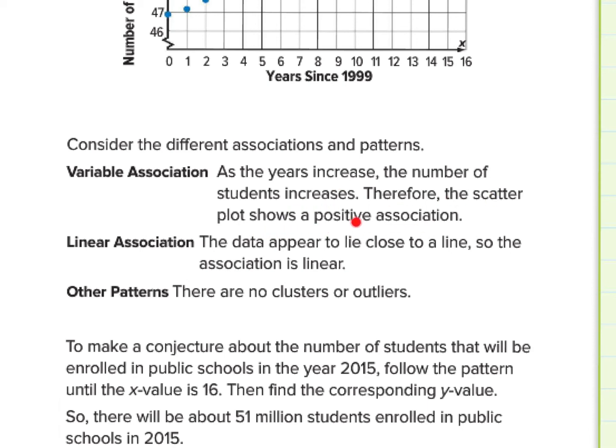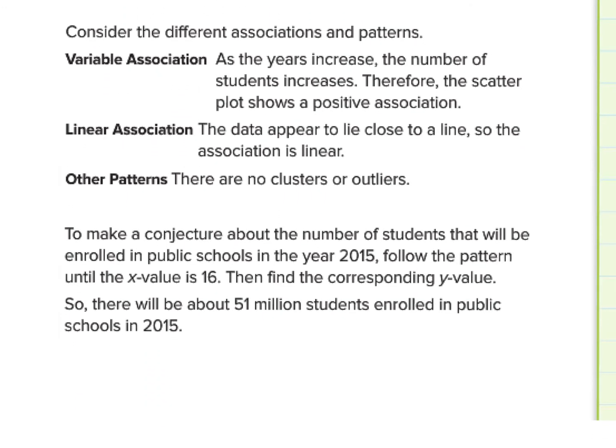And if we continued our trend with the line, I had to draw a straight line. I could draw a line right through there. And follow the time down to the 15th year. And that would bring me to about just over 51 million. Maybe 51.2. About 51.2 million. So it helps us make a prediction. So we can definitely say that the variable association, the years increase, the number of students increase. So as the years increase, the number of students increase. We saw that. Therefore, the scatterplot shows a positive association. It has a linear association that appears to lie close to a line. But it's linear. And there are no other patterns. There are no clusters and no outliers. So if we had to, you can see here, and that's the conclusion we came to. If we had to make a conclusion, or sorry, an estimate or a prediction, conjecture, about the possible number of students by 2015, we would follow the pattern until the x value is 16. Then, or because it's 16 years after 1999, which would make it the year 2015, then find the corresponding y value. So there will be about 51 million. Students enrolled in public schools in 2015, so about 51 million.